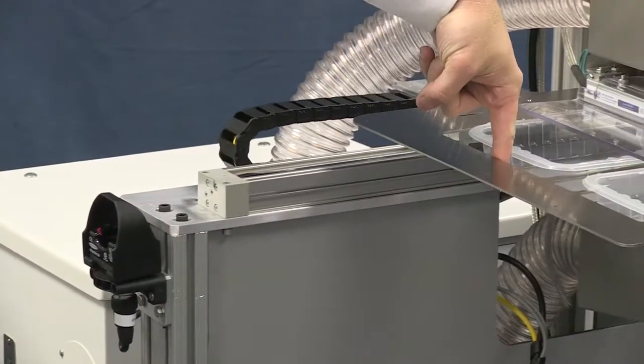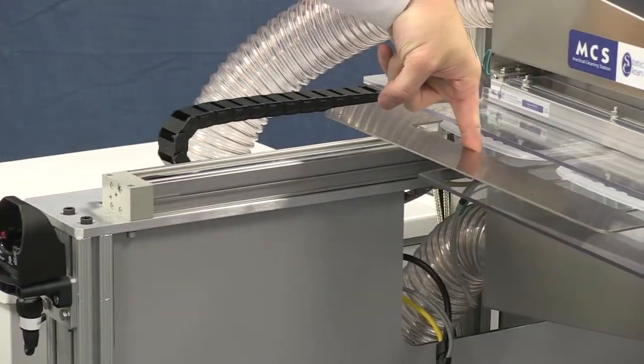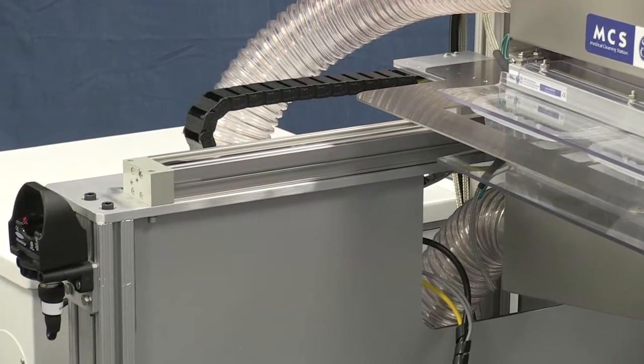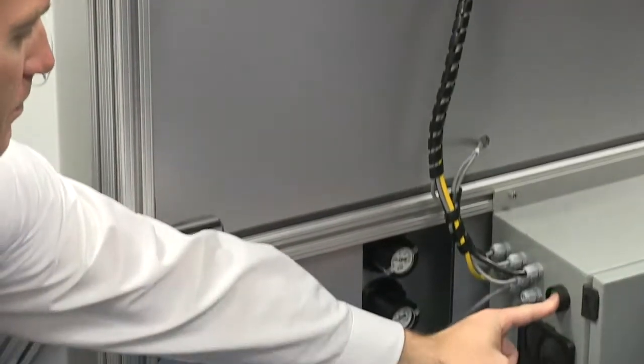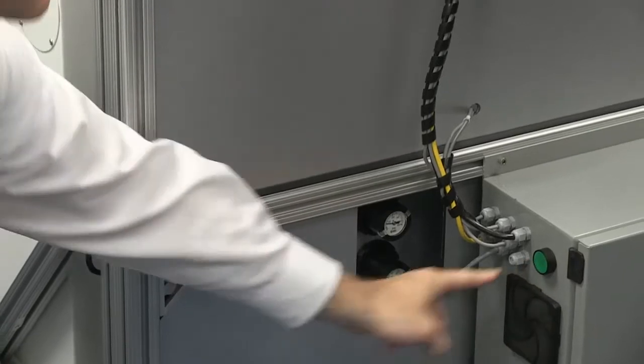Integral safety features shut off the system if an obstruction is encountered along the shuttle's path and can easily be reset with the push of a button once the obstruction is cleared.